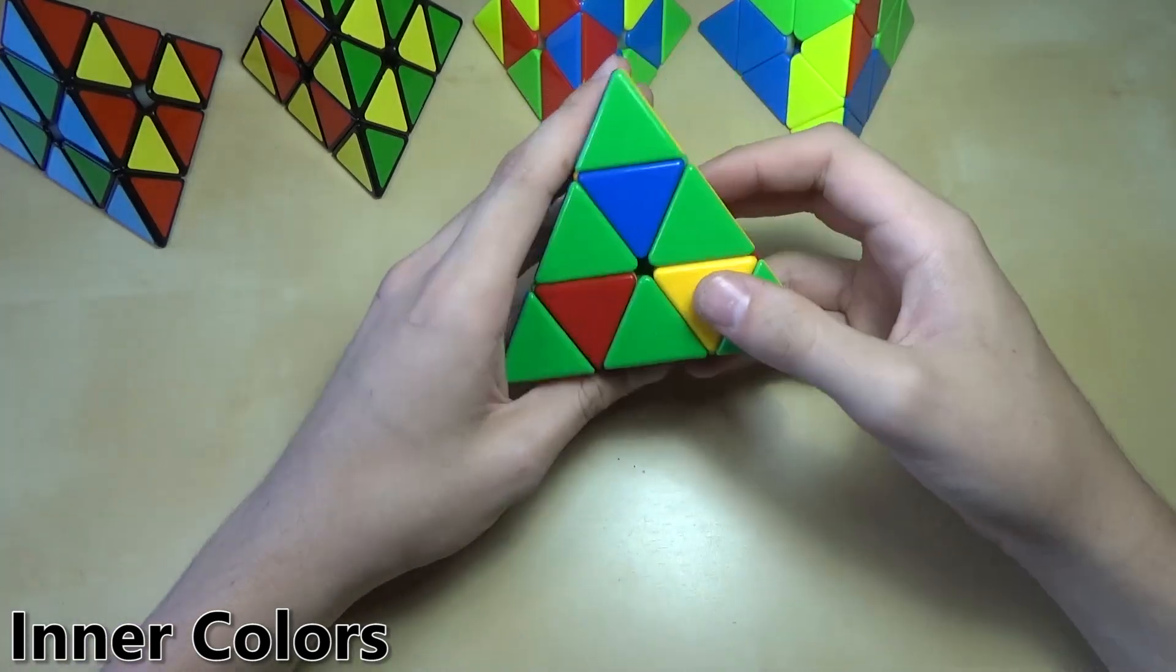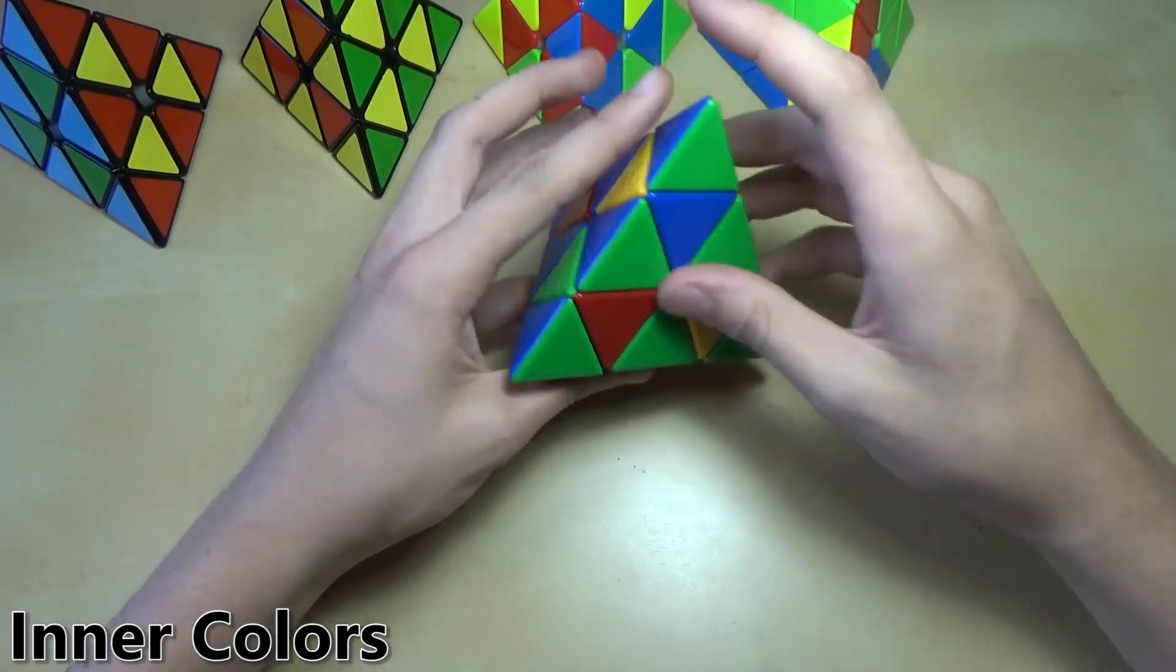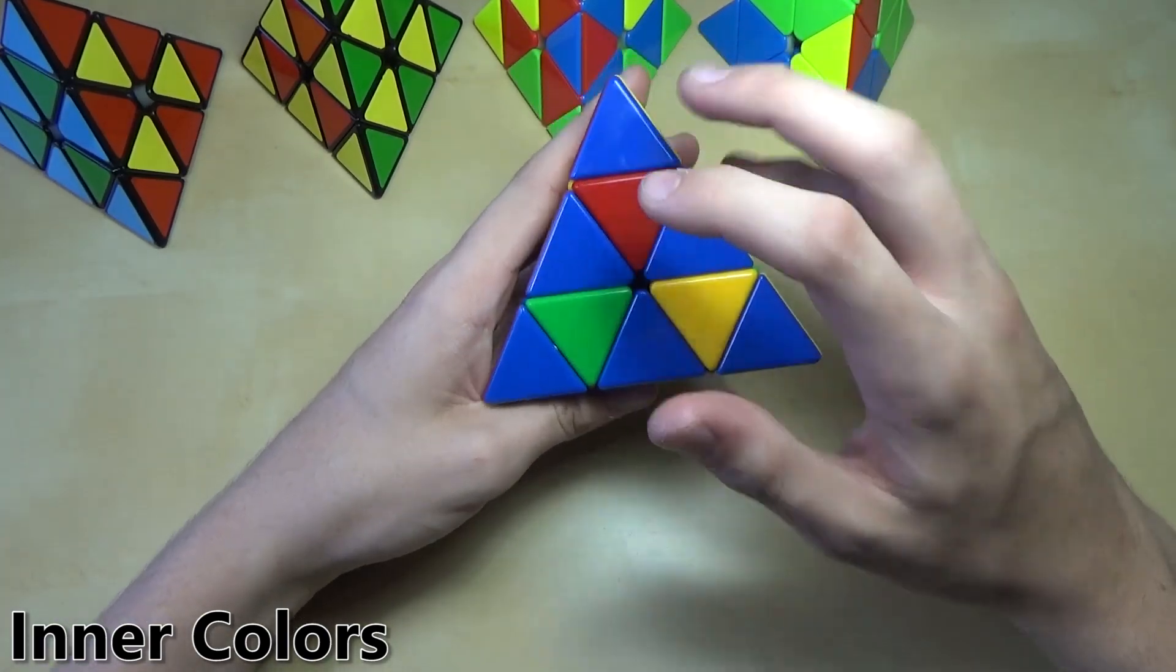And then finally we have this pattern. Pretty much on every side you have kind of an outline of one single color, and then you have the three other colors in the middle.